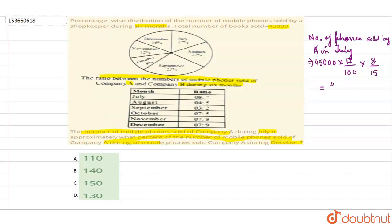So this is equal to 4080. Number of phones sold by company A in July is 4080.